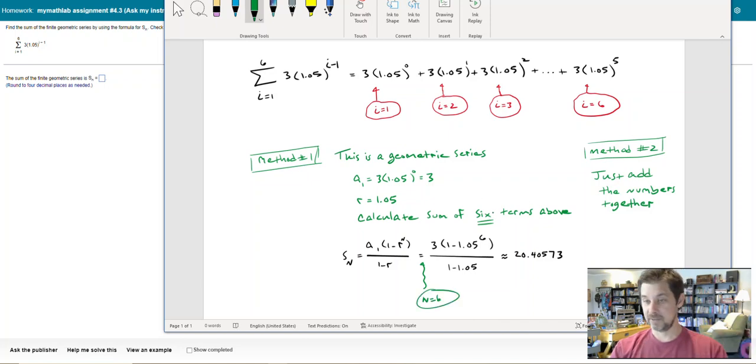Because I'm trying to find the sum of six terms, there are six terms right here. So I get 1.05 to the sixth power divided by 1 minus r, but r is 1.05. Now at this point I would use my calculator, I get 20.40573. So that's one way to do it. I put Method 1 here that you can use this formula that is intended to calculate the sum of n terms of a geometric series, six terms in my case right here.